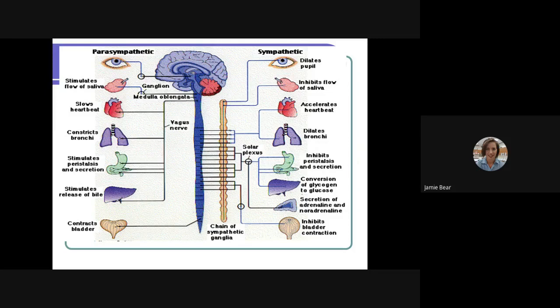In the parasympathetic nervous system, which is part of our autonomic nervous system, this is our resting phase. At this point, our body stimulates the flow of saliva so that we have plenty of fluid to digest our food. Our heartbeat will slow down. Our bronchioles will naturally constrict. It stimulates peristalsis and secretion so that we can digest our food. There is stimulation and release of bile and our bladder contracts.